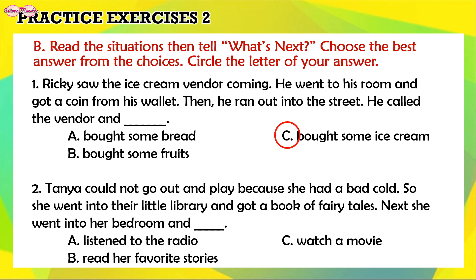2. Tanya could not go out and play because she had a bad cold. So she went into their little library and got a book of fairy tales. Next she went into her bedroom and... A. Listen to the radio. B. Read her favorite stories.